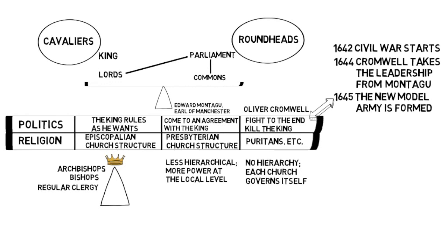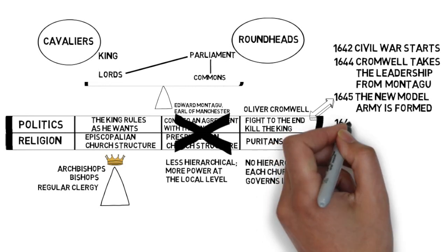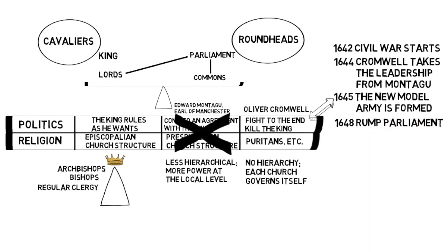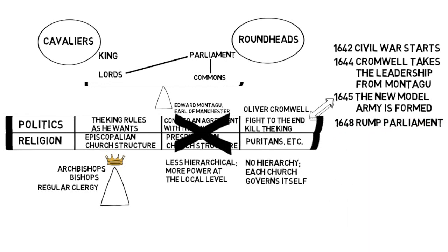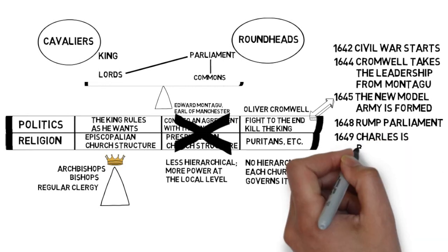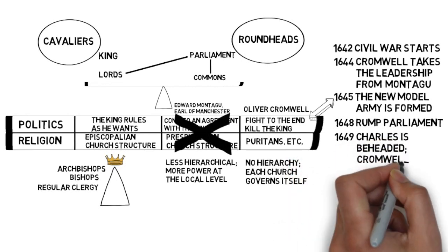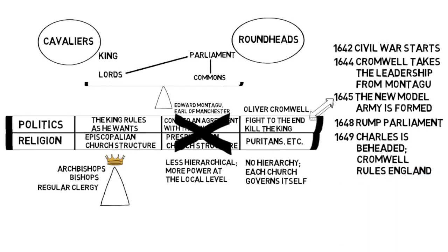In 1648, the more moderate faction — which wanted to come to an agreement with the king and which basically wanted a Presbyterian church structure — was pushed out, leaving what was known as the Rump Parliament: the leftover bit of the parliament after most of the politicians had been kicked out. This was the faction with the more extreme view, aiming to fight to the end and kill the king if necessary, and they remained in power. Then in 1649, Charles was indeed beheaded, and Cromwell ruled England from then on until his death.